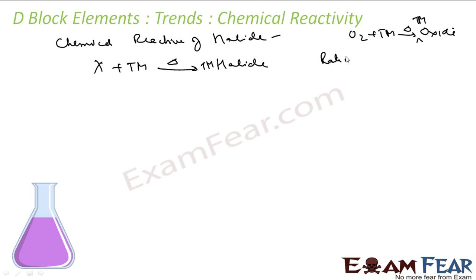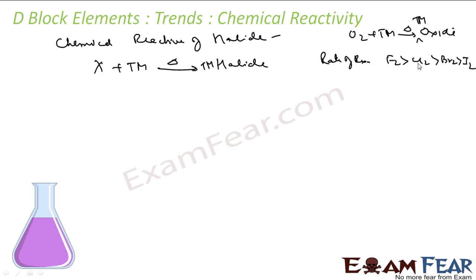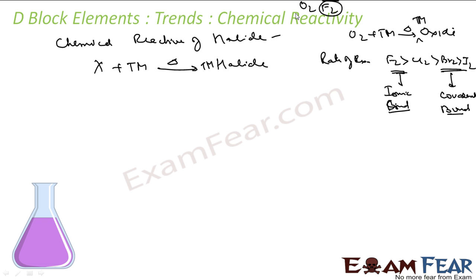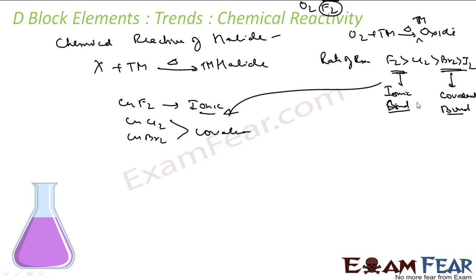In terms of rate of reaction with transition metals, fluorine is most reactive, then chlorine, then bromine, then iodine. Fluorine actually forms ionic bonds because it is very electronegative — a high electronegativity difference results in ionic bonding. Other halogens tend to form covalent bonds with transition metals. For example, CuF2 is ionic, whereas CuCl2 and CuBr2 are covalent. Transition metals display high oxidation states in the presence of oxygen and fluorine.